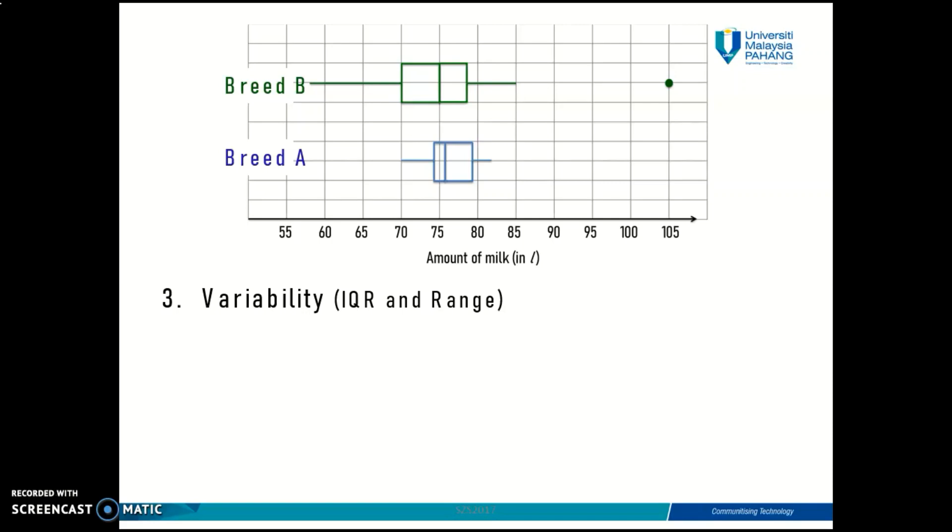In the sense of variability, the only measures of variation that you can see in a boxplot is just your IQR and also the range. So do you still remember what is the formula for range and what is the formula for IQR? Range is the maximum value minus minimum value, while IQR is quartile 3 minus quartile 1. And you can see that in the boxplot.